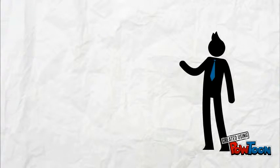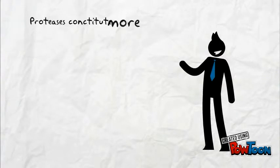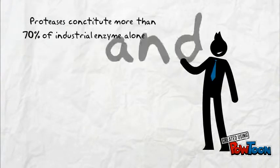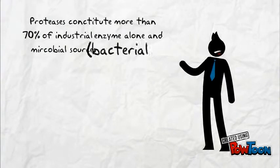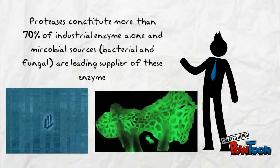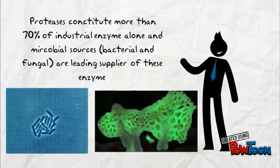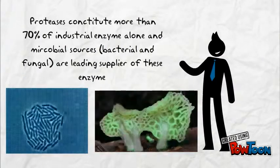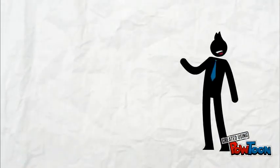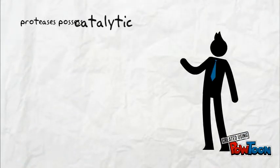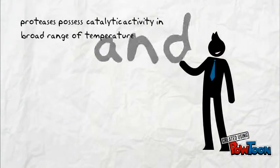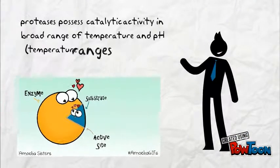Proteases constitute more than 70% of industrial enzymes. Microbial sources alone — bacterial and fungal — are the leading suppliers of these enzymes. Proteases possess catalytic activity across a broad range of temperature and pH.